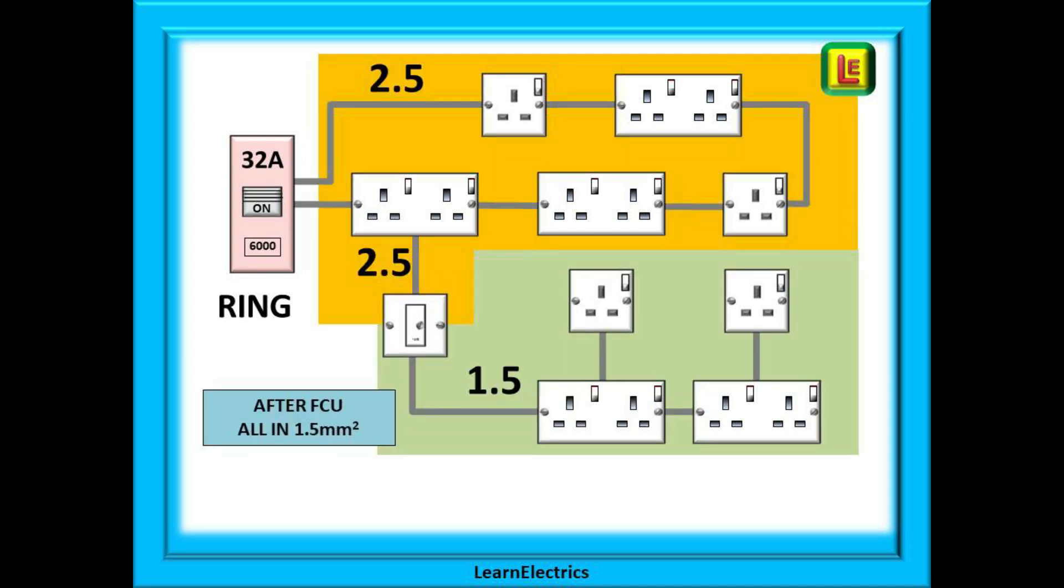If we want to add several extra sockets at a particular point in the circuit, for instance into a newly built patio, then we can do this by adding a 13 amp FCU to the ring. The cables to the FCU must be 2.5 mm. The cables after can be 1.5 mm.